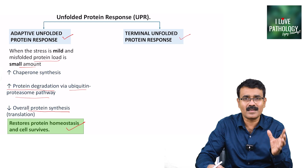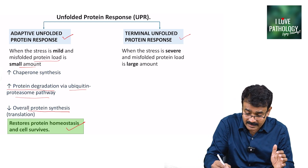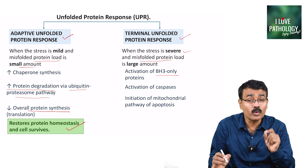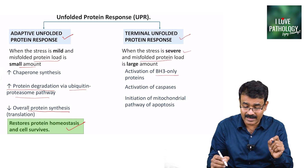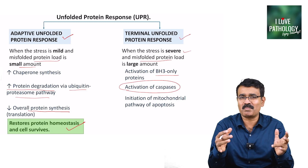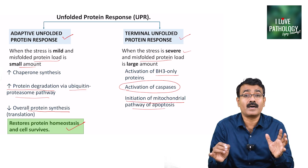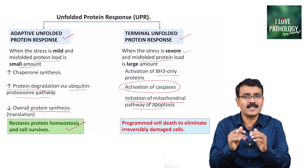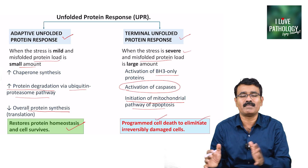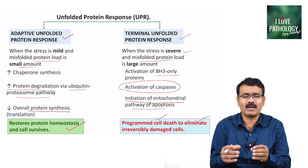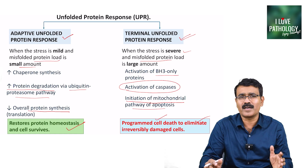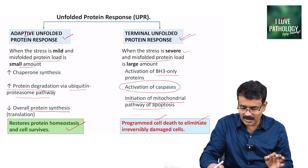The second response is the terminal unfolded protein response, where the stress is very severe and the load of misfolded proteins is very large. In these cases, there is activation of BH3-only proteins, and along with that, activation of caspases — which are very important proteases in apoptosis — and initiation of the mitochondrial pathway of apoptosis. All these result in apoptosis or programmed cell death, which serves to eliminate these irreversibly damaged cells. This is all about unfolded protein response, both the adaptive and the terminal forms.